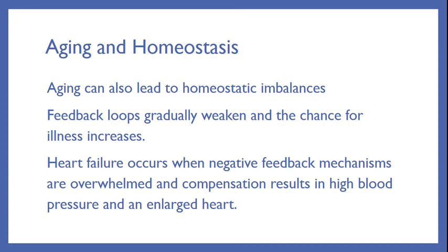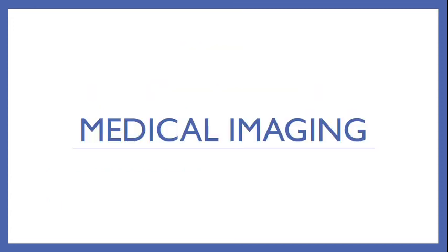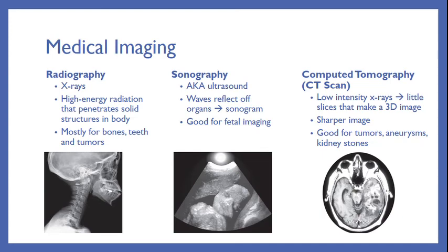One more topic and then we're done — medical imaging. On the left, we have radiography, which are x-rays. High-level radiation penetrates solid structures in the body. We mostly use these for bones, teeth, and occasionally tumors, as those solid structures show up very well on an x-ray. Plus, they're very cheap and easy to do. Next up are ultrasounds — this is when we use waves to reflect off of organs to produce a sonogram. These are good for fetal imaging.